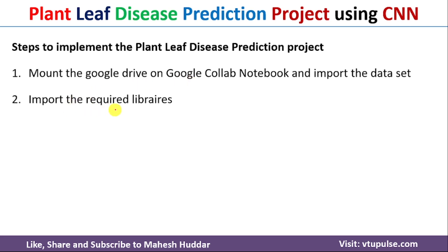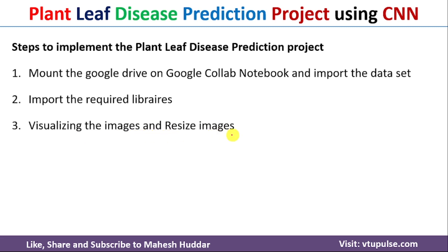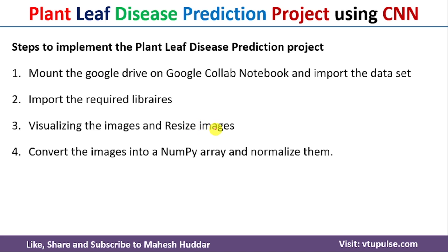The second step is to import all the required libraries. Next, we need to visualize the images and then resize them if required. Once you import the dataset, we visualize the images to check they have been imported correctly. We then convert those images into a NumPy array because we cannot give an image directly as input to the CNN model, and we will normalize them in the range 0 to 255.